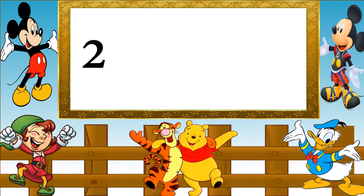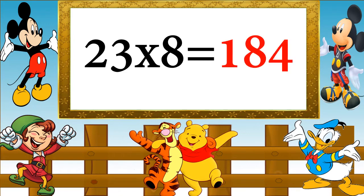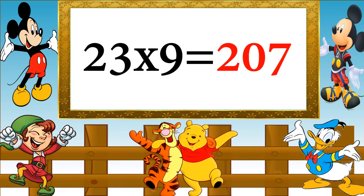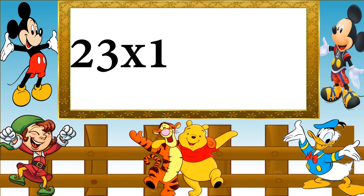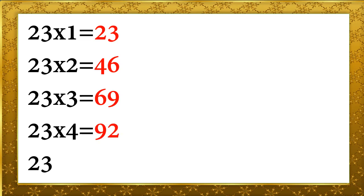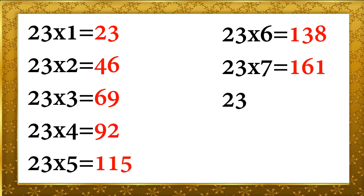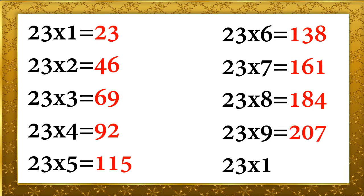23 sevens are 161, 23 eights are 184, 23 nines are 207, 23 tens are 230. 23 ones are 23, 23 twos are 46, 23 threes are 69, 23 fours are 92, 23 fives are 115, 23 sixes are 138. 23 sevens are 161, 23 eights are 184, 23 nines are 207, 23 tens are 230.